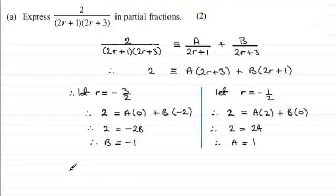So therefore, in summary then, we've got our fraction here, 2 over (2r + 1) multiplied by (2r + 3). This is going to be identical to A over 2r + 1. A is 1, so it's 1 over 2r + 1.